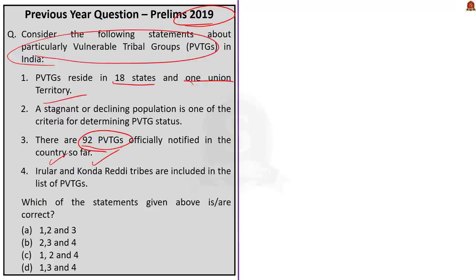Which of the statements given above are correct? Option A: 1, 2 and 3. Option B: 2, 3 and 4. Option C: 1, 2 and 4. Option D: 1, 3 and 4.